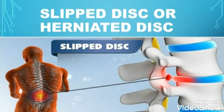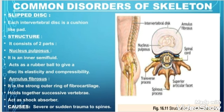Slip disc, or the herniated disc — the diagram below shows the herniated disc. During it, a disc may be slipped. The question arises whether it is the entire disc or just a part of the disc that slips. To understand this, we first have to know about the intervertebral disc. The word 'disc' represents a layer of cartilage, and as it is intervertebral, 'inter' means between and 'vertebral' means vertebrae.